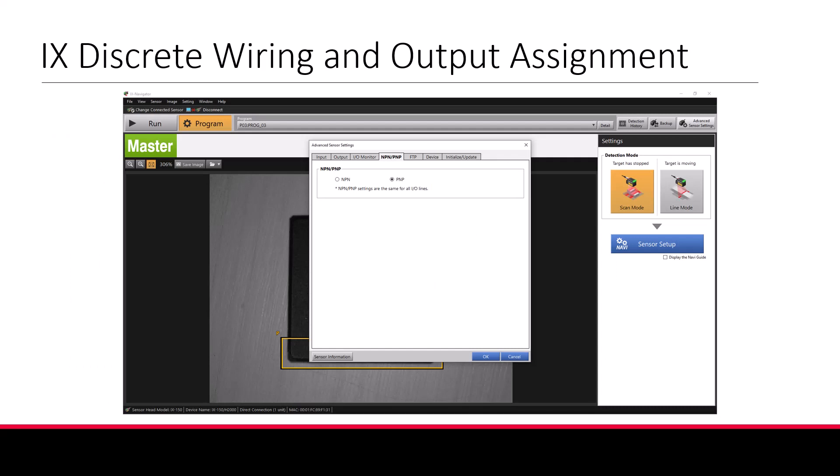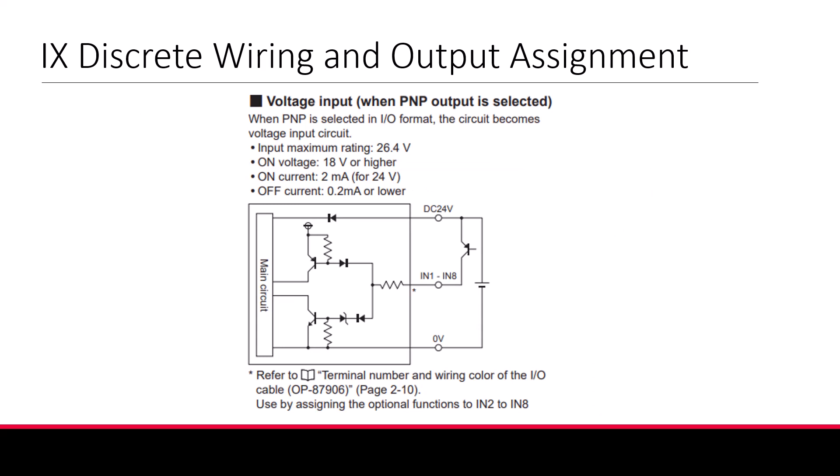In this video, inputs and outputs will be wired in PNP style, which is most common in America. You'll see on our wiring diagram, the sensor on the left is wired to the 24V and 0V power supply. This element represents our input device, which could be a PLC, photo eye, push button, or any device capable of sending a discrete signal. For this demonstration, we'll use a push button to show how this works.